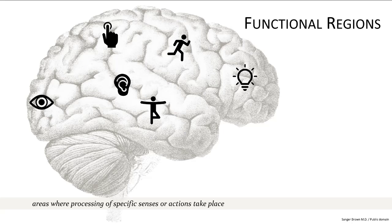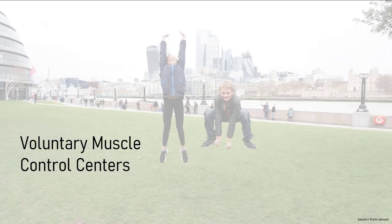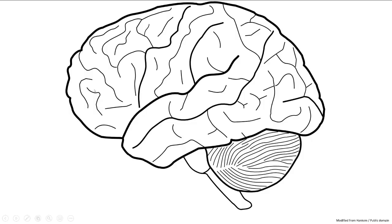Now let's look at functional regions — regions that are not necessarily anatomically defined but are general areas responsible for certain actions or sensations. These regions are within lobes and sometimes cross over lobes. Starting with voluntary muscle control centers, the central sulcus is the division between the frontal lobe and the parietal lobe.